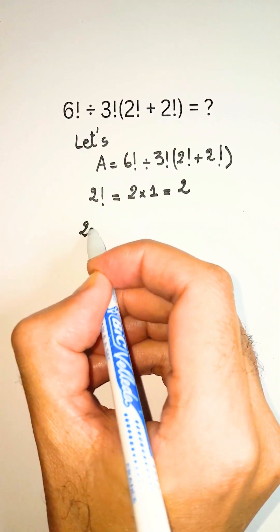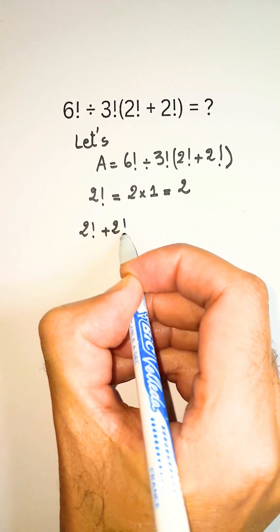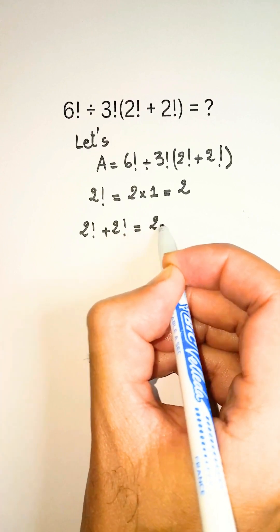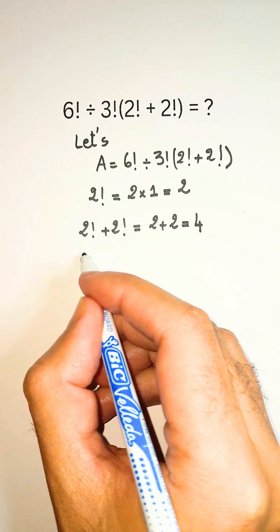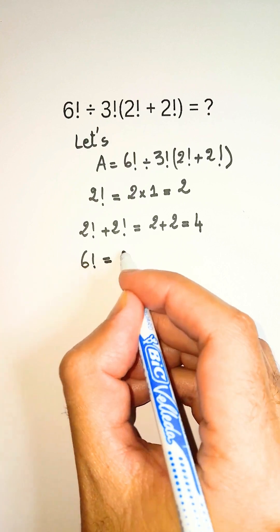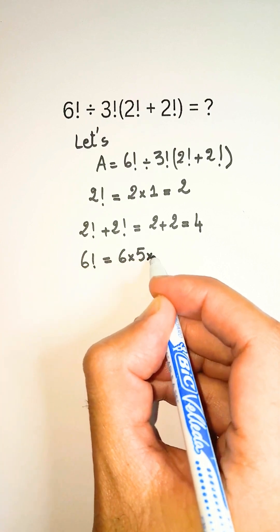The first operation is the sum inside the parenthesis, giving 2 factorial plus 2 factorial equals 4. The second operation is the division. Let's expand the factorials.